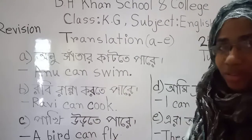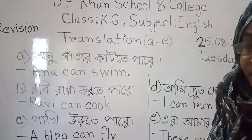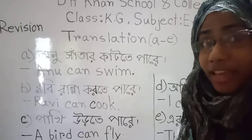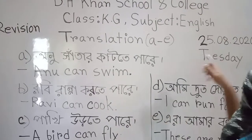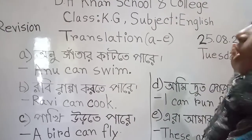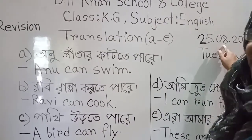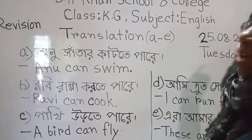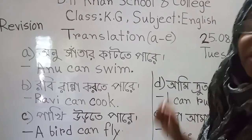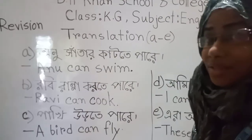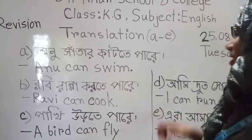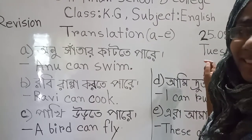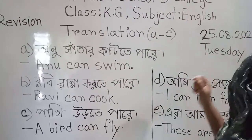Can you say what date is today? Today is 25th of August 2020. And what day is today? Today is Tuesday.